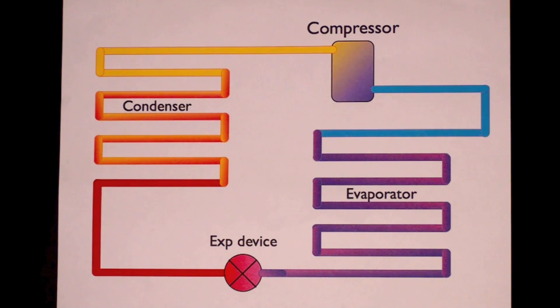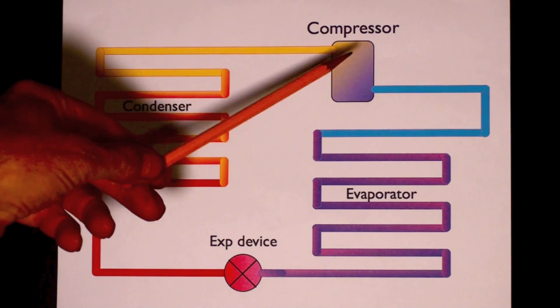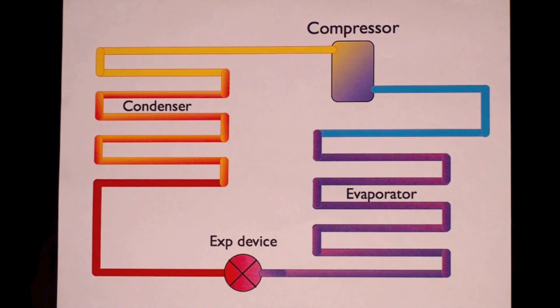Okay, four things make up the mechanical refrigeration system. Compressor, which is a prime mover, it is a compressor. It takes a low-pressure gas and turns it into a high-pressure gas.